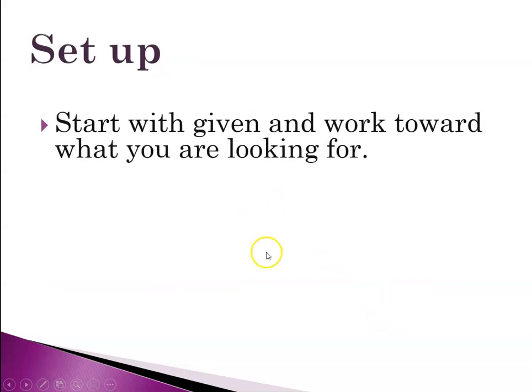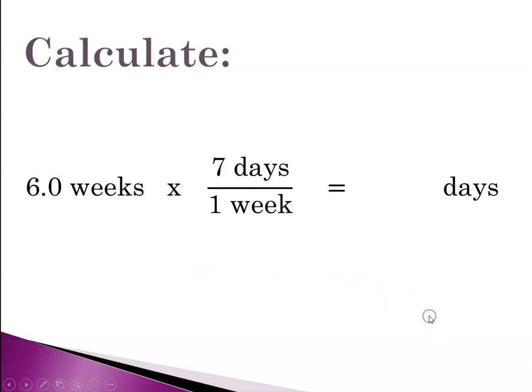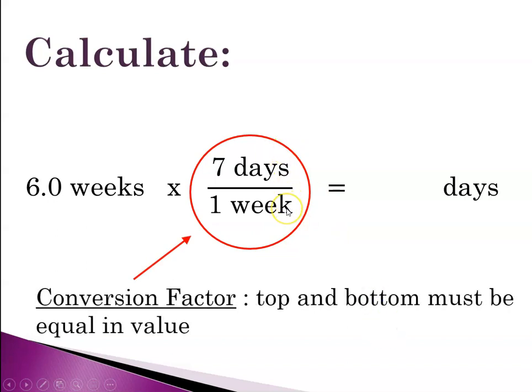And then the setup. Start with the given and work towards what you're looking for. So in this case your given is 6.0 weeks and the unknown is how many days. And then you're going to calculate. And so you're going to say 6 weeks times - and here's your conversion fact. And again top and bottom must be equal in value. 7 days in one week. And the reason we set it up this way is the unit we want needs to be on top in the numerator. We want days. So days is in the numerator and weeks, the unit we're getting rid of is in the denominator.